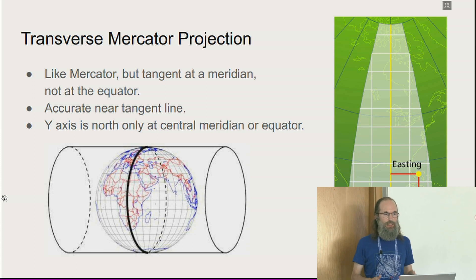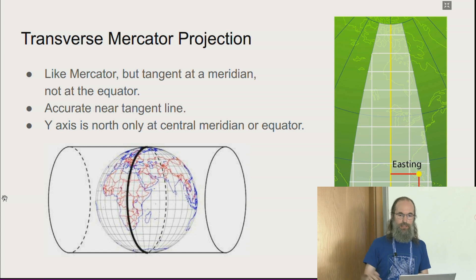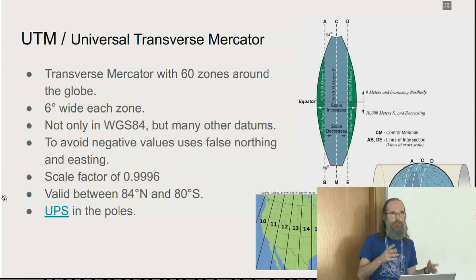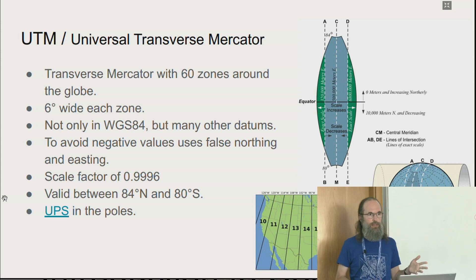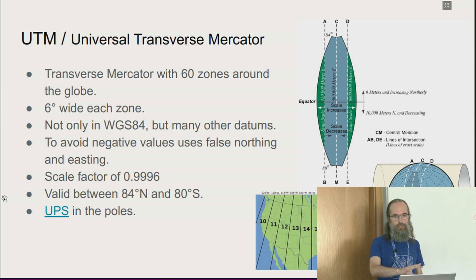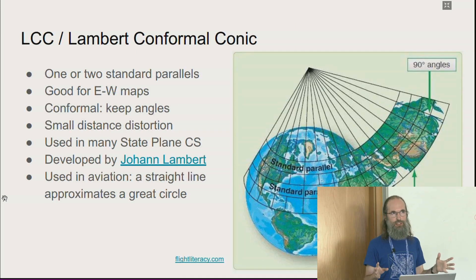The Transverse Mercator projection rotates the cylinder so it's tangent on a meridian rather than the equator, keeping a small zone around that tangent line accurate. Note that north is not always up in every point of this projection. UTM is a specific parameterization of Transverse Mercator: 60 zones, each 6 degrees wide, with well-defined parameters. Berlin is in UTM zone 32, for instance. But UTM is a projection, not a complete reference system — you can apply UTM on top of WGS84, NAD83, ETRS89, or others. So if you say UTM, you must also specify the datum.